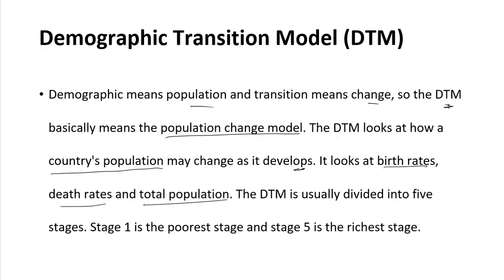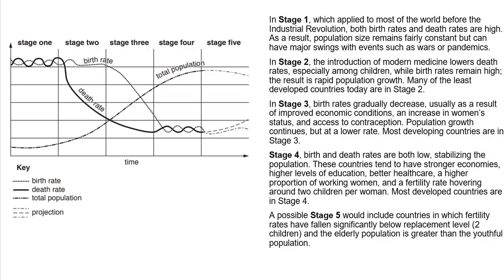The demographic transition model is usually divided into five stages. Stage one is the poorest stage and stage five is the richest stage.